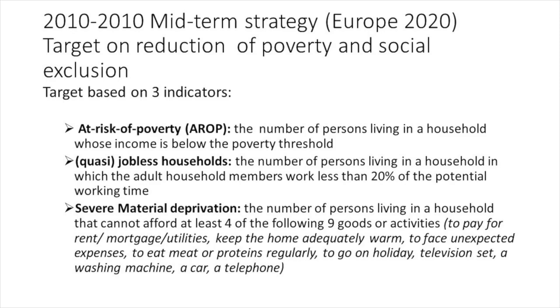The third indicator which served as a basis for the target was the severe material deprivation indicator. This measures the number of persons living in a household that cannot afford at least four of nine items: to pay for rent, mortgage or utilities; keep the home adequately warm; face unexpected expenses; eat meat or proteins regularly; to go on holiday; a television set; a washing machine; a car; a telephone. If a person lives in a household which lacks at least four of these nine items, the person is considered to be living in a situation of severe material deprivation.